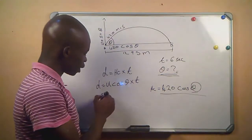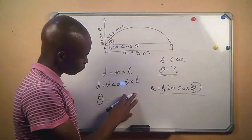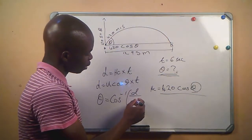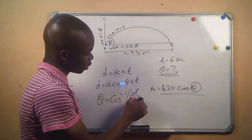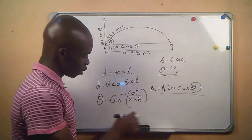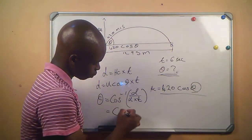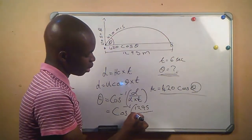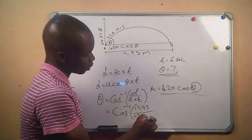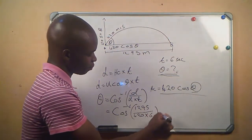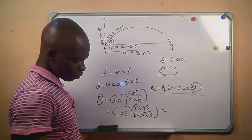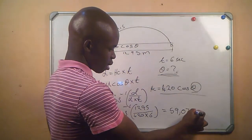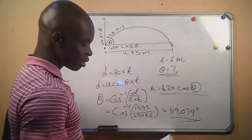Rearranging gives: θ = cos⁻¹(d ÷ (u × t)). Substituting the values: θ = cos⁻¹(1295 ÷ (420 × 6)), which gives us 59.079 degrees. That is our final answer — the angle at which the cannon was launched.